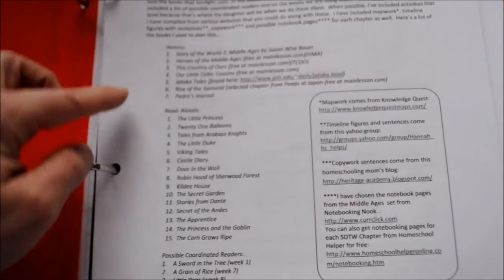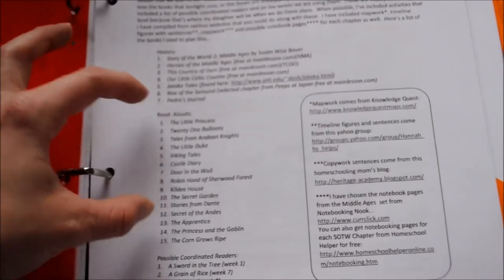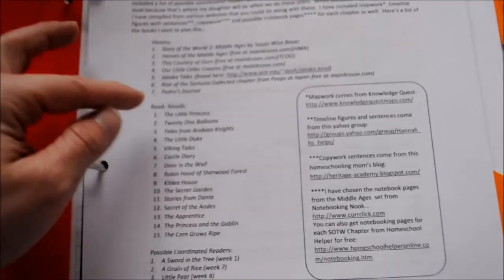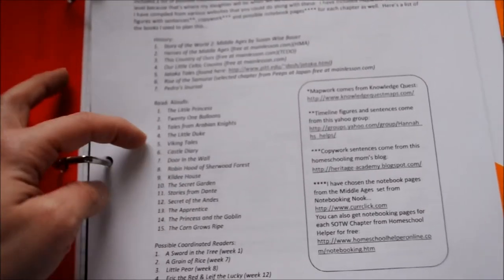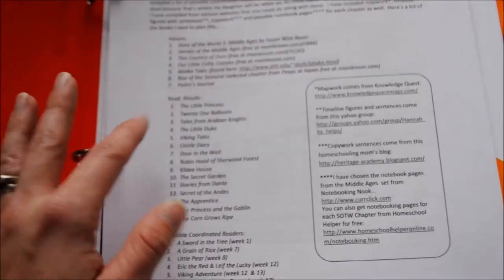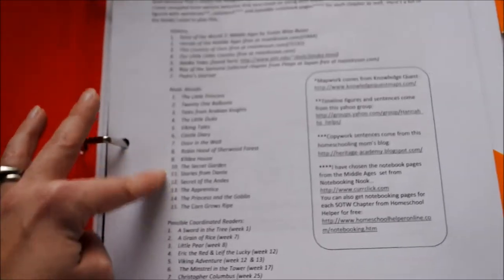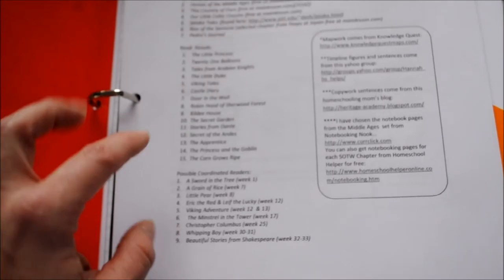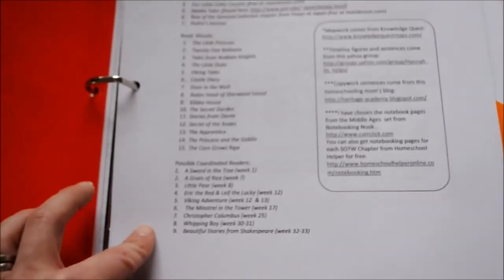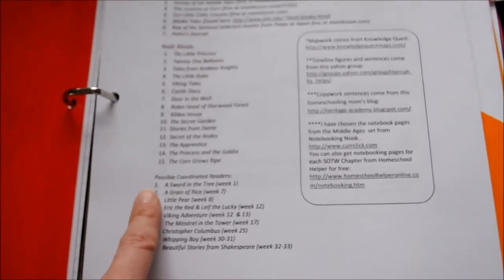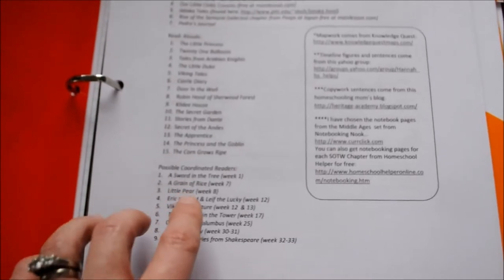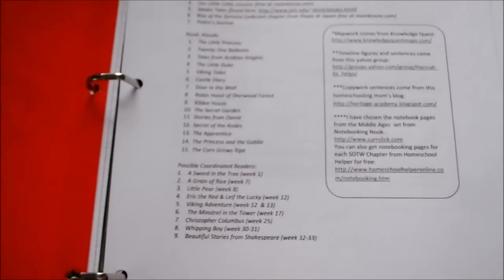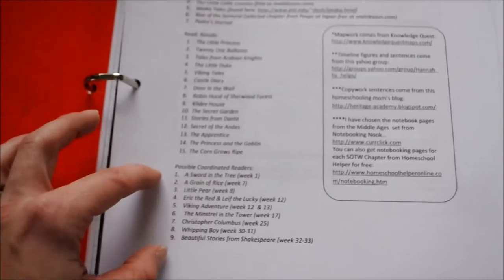Then she has her read aloud list, so that she reads aloud along with this. So Little Princess, Twenty One Balloons, Tales from Arabian Nights, The Little Duke, Viking Tales, Castle Diary, and on and on. And then she has Possible Coordinated Readers, which this really sold me on downloading this and following this because I wanted something for Miette to read on her own that kind of corresponds with what we're reading. So this really helped.